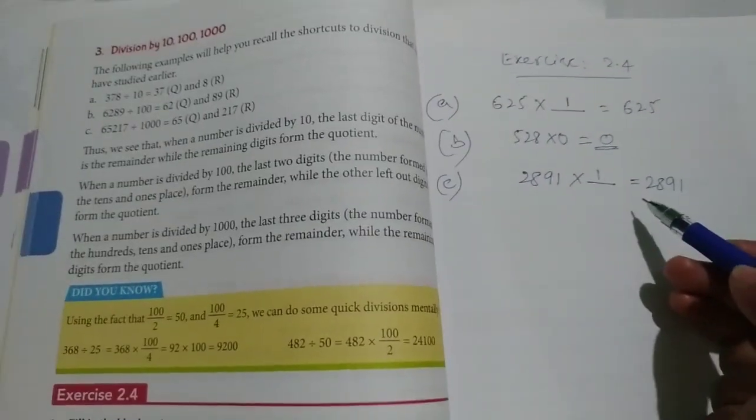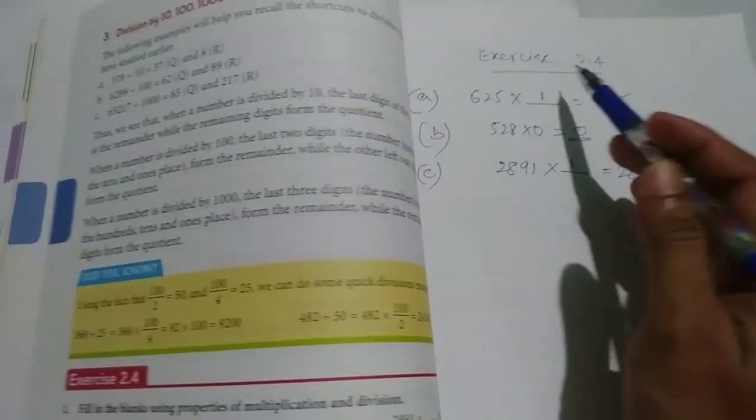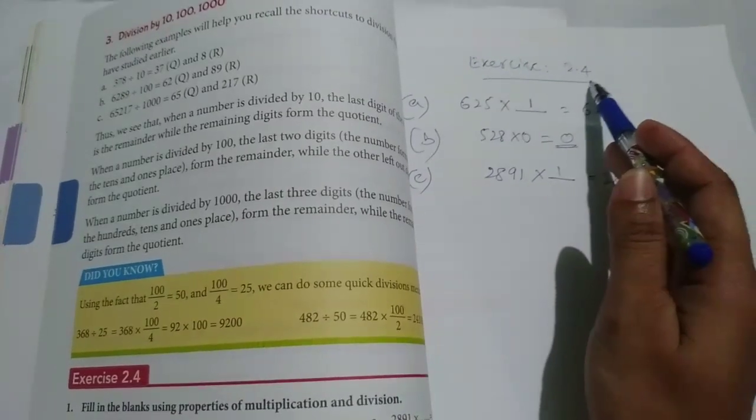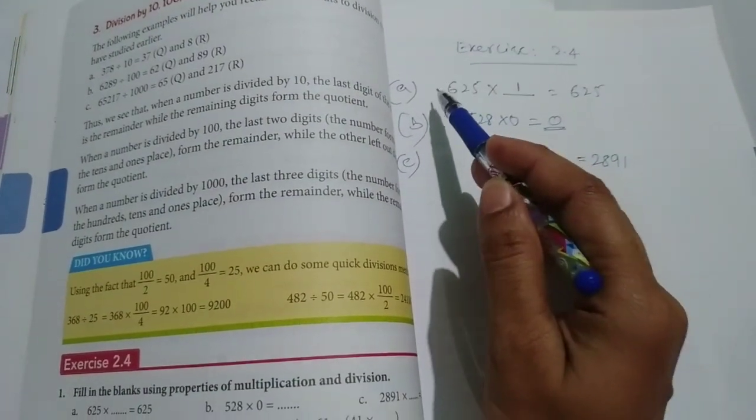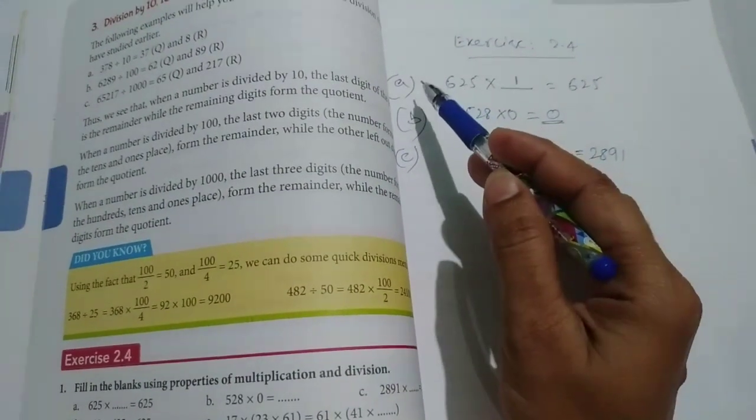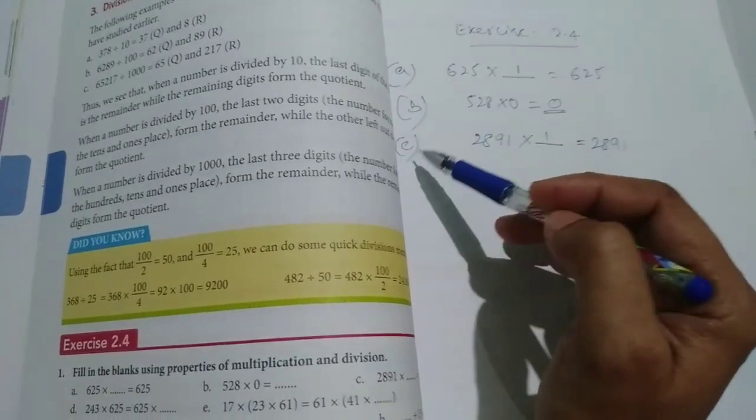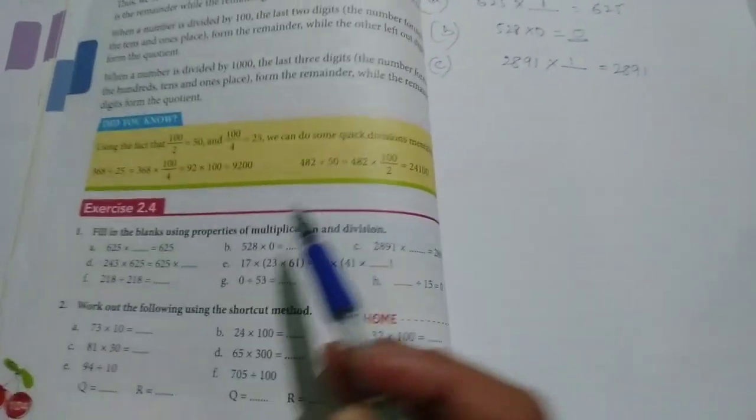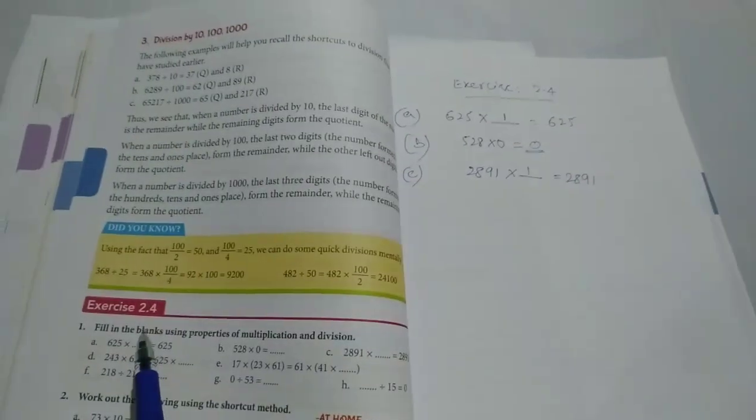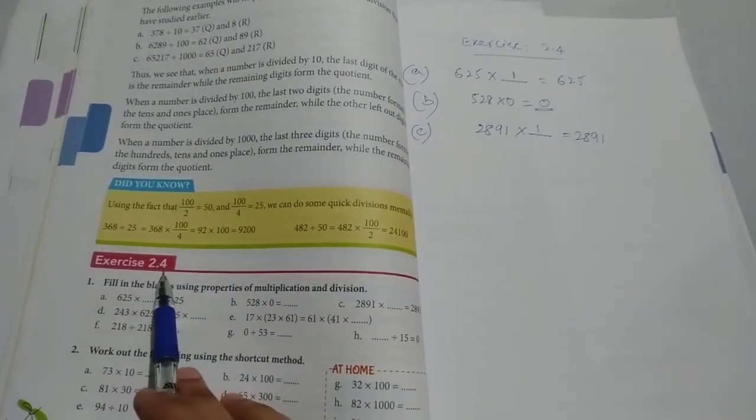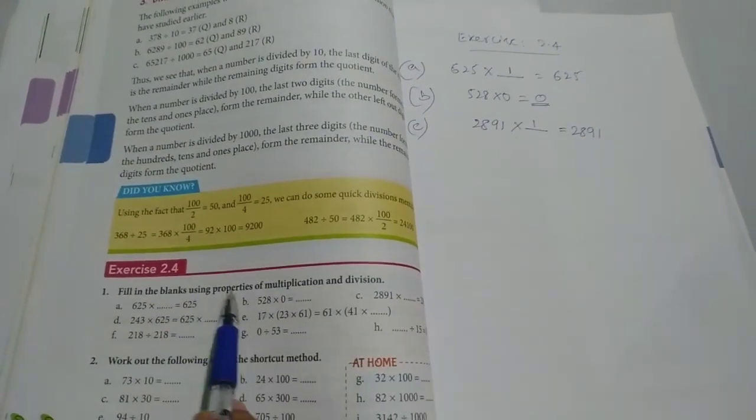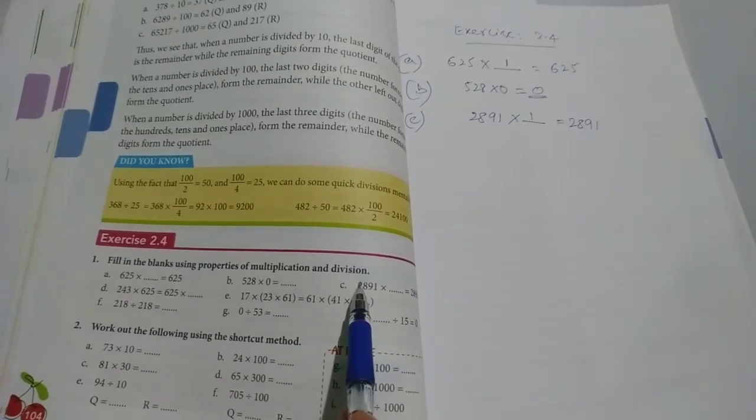Dear 5th standard students, we were discussing exercise 2.4. In that, we did problems 1st, 2nd, and 3rd - that means problem number A, B, and C. We finished those in this exercise, isn't it? Problem 2.4, 1st one, 2nd one, and 3rd one completed.